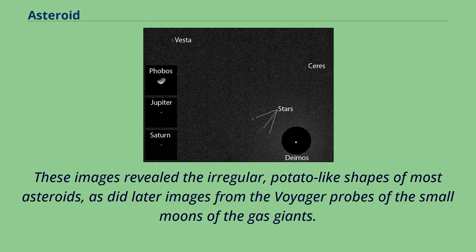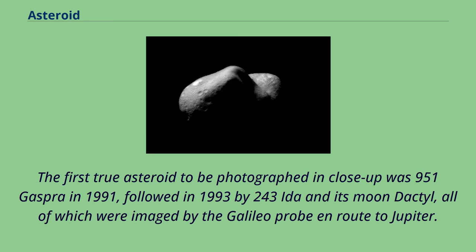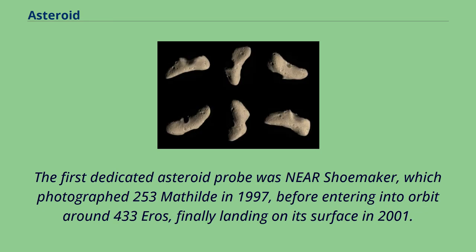These images revealed the irregular, potato-like shapes of most asteroids, as did later images from the Voyager probes of the small moons of the gas giants. The first true asteroid to be photographed in close-up was 951 Gaspra in 1991, followed in 1993 by 243 Ida and its moon Dactyl, all imaged by the Galileo probe en route to Jupiter. The first dedicated asteroid probe was NEAR Shoemaker, which photographed 253 Matilda in 1997, before entering into orbit around 433 Eros, finally landing on its surface in 2001.